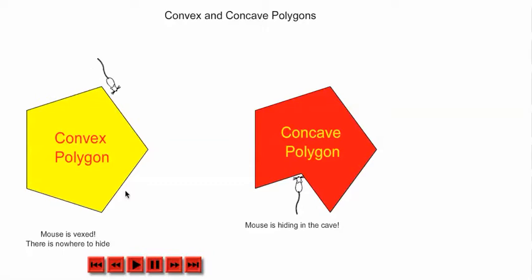If you extend the sides of each polygon, make them into lines and extend them out, these sides never cross into the interior of the polygon.